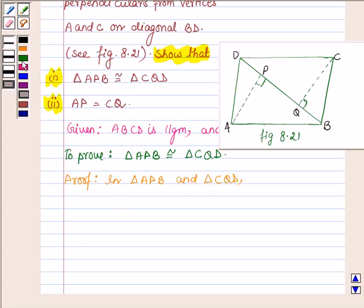Now in these two triangles, AB is equal to CD since opposite sides of a parallelogram are equal.